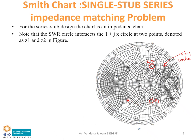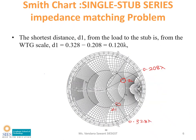Continuing to move in the clockwise direction on the VSWR circle, we find a second intersecting point, Z2. Z1 and Z2 are the two possible stub positions. The distance between ZL and Z1 is called D1 — that is the first possible position of the stub. We need to find out this distance D1.